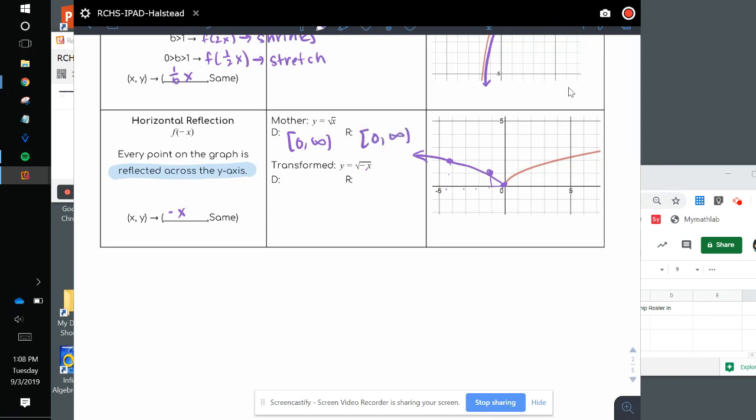Does the range change? Nope, still the same height. But our domain sure changes. We're going to start with negative infinity as our min and end with 0 now. And that is it for now.